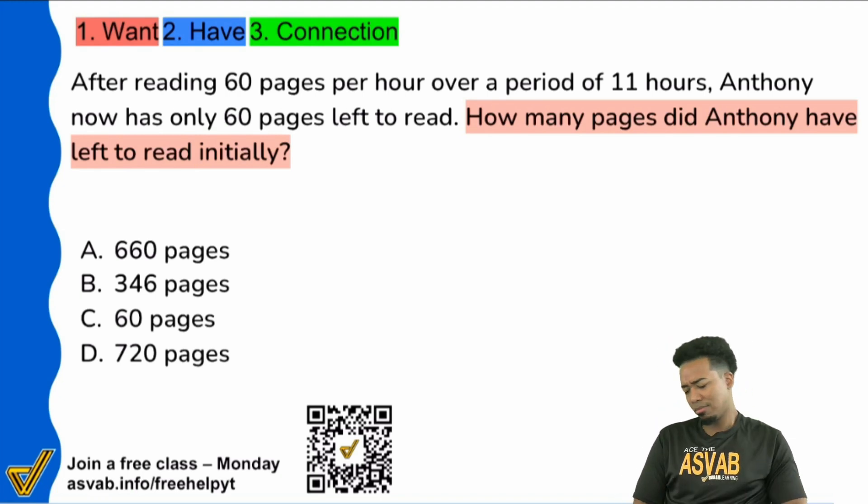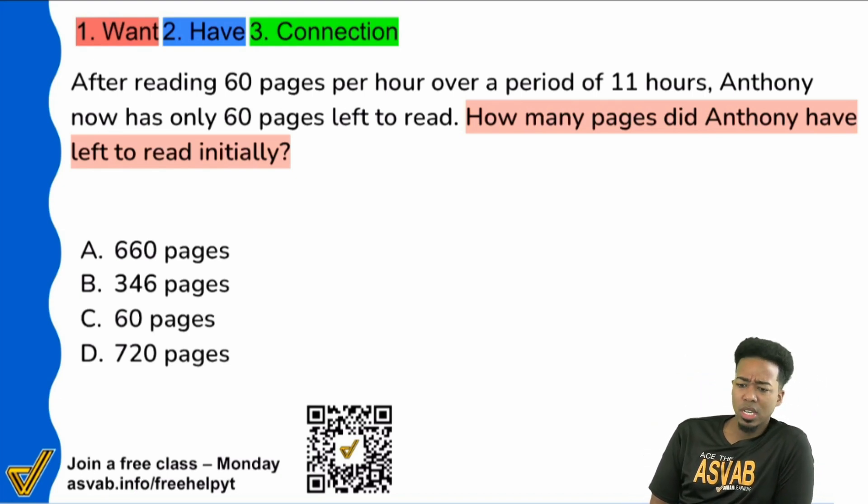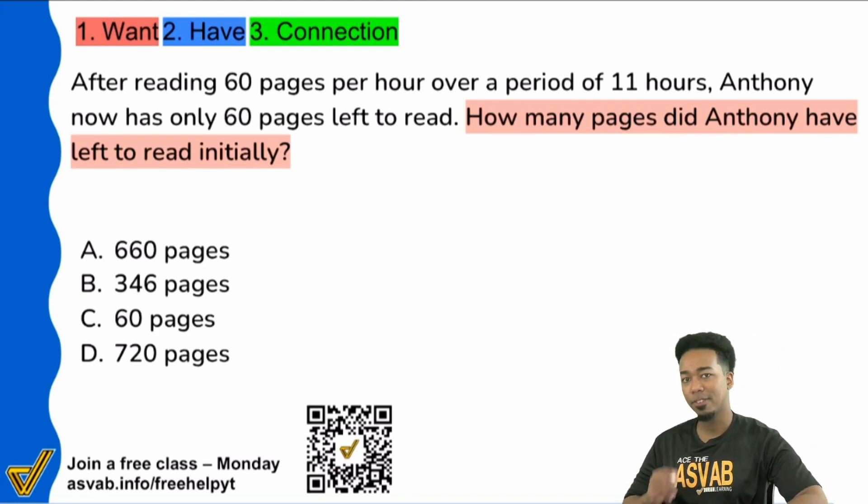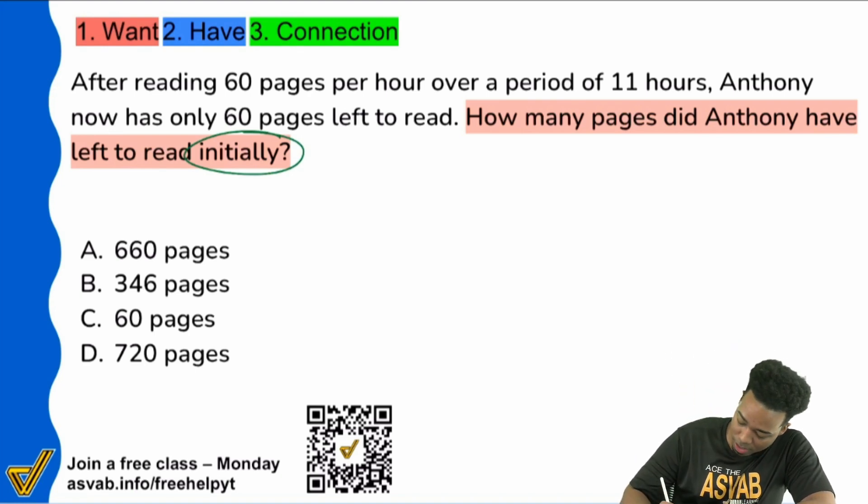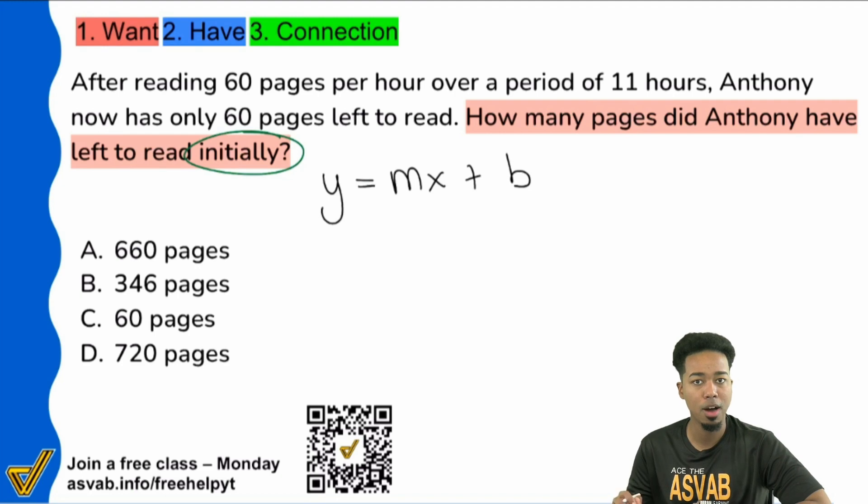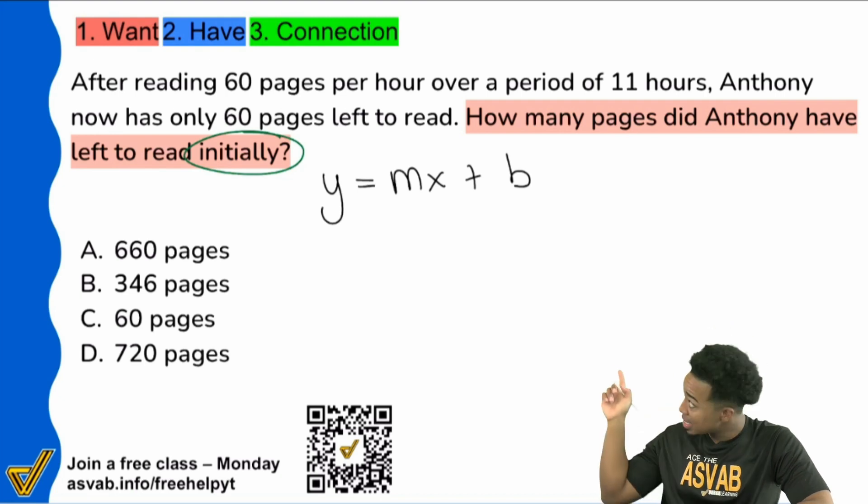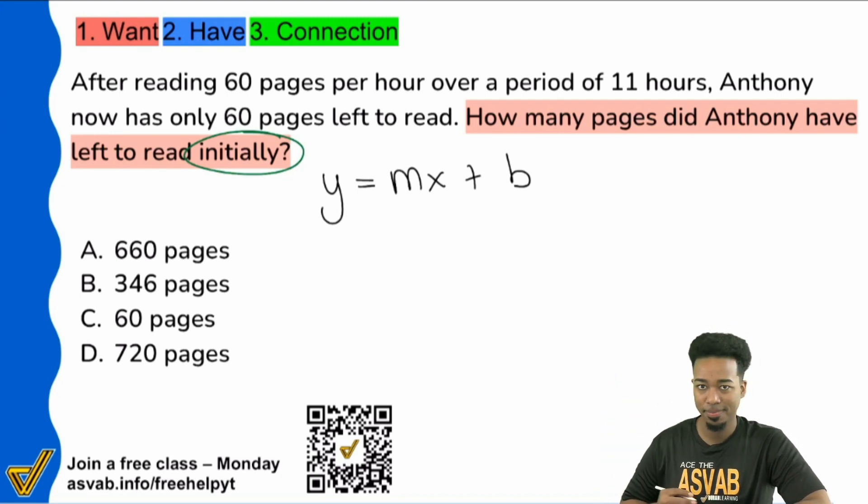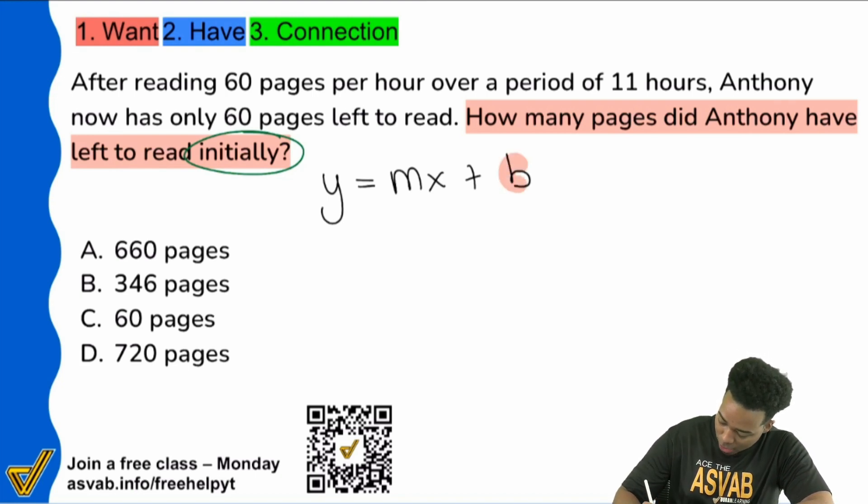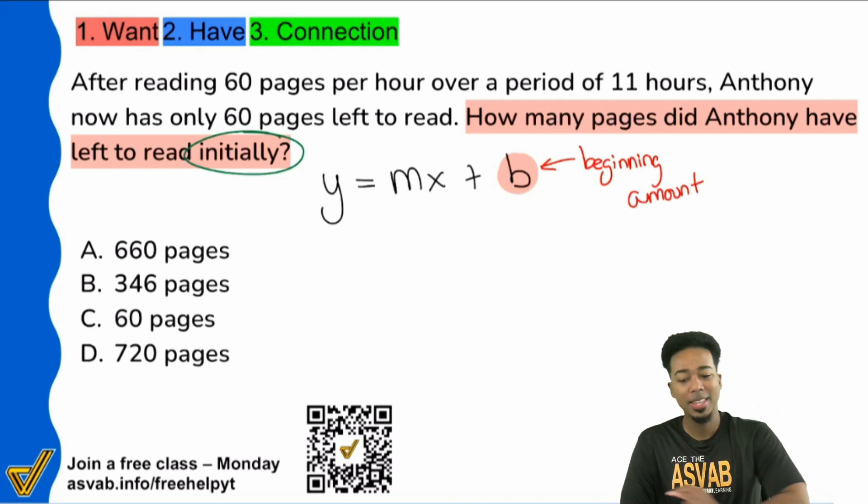How many pages did Anthony have left to read initially? So that doesn't make all the sense in the world at first. But if I'm looking at this, there's a key word in there and that key word is going to be initially. Again, what we're going to be working through is the equation y equals mx plus b. I'll explain each part as we go through the problem. But when we're looking for what we have initially, that is always going to be regarded as the b, or what's going on in the beginning. So that initially, right over here, this is what we're looking for. This is what we want, the beginning amount.